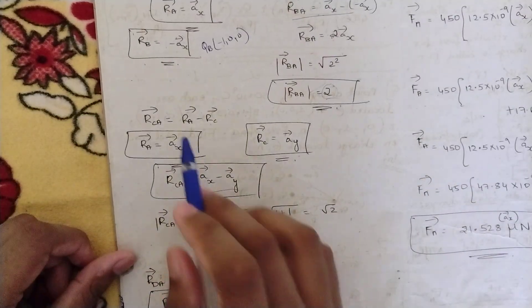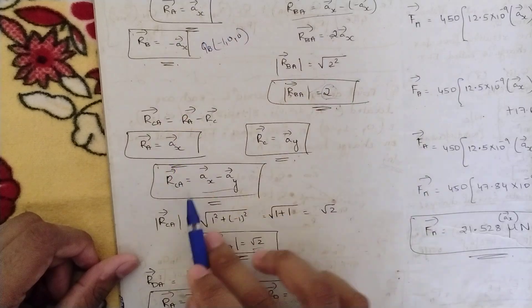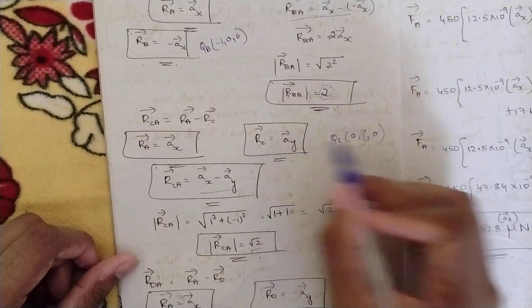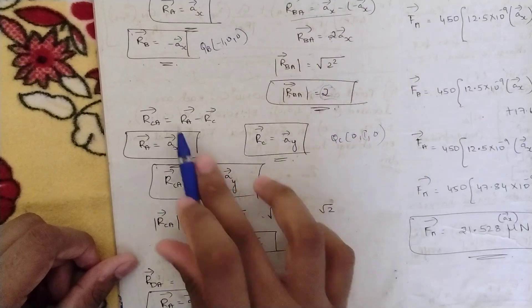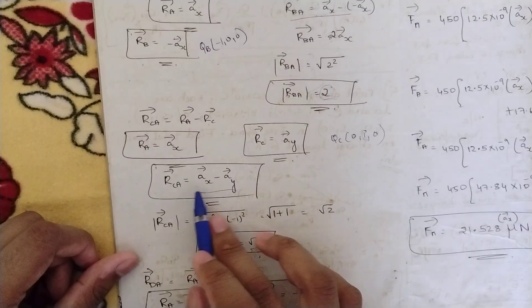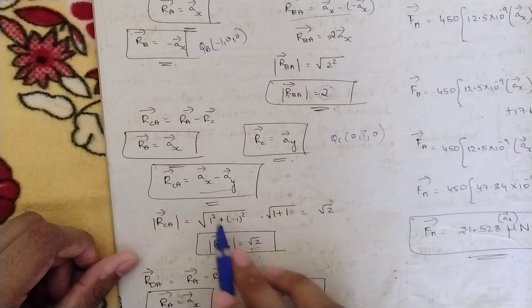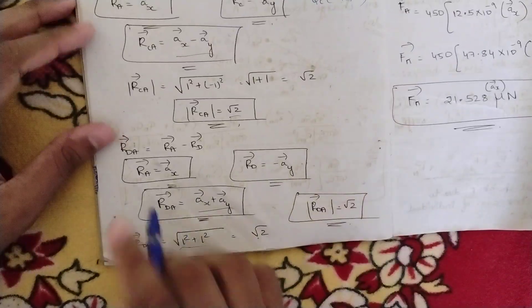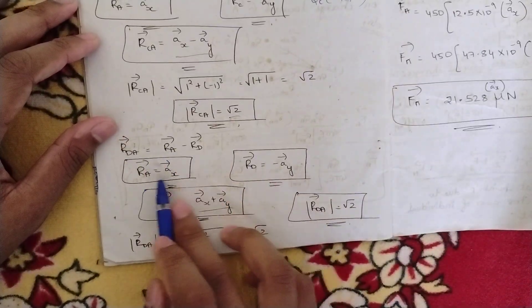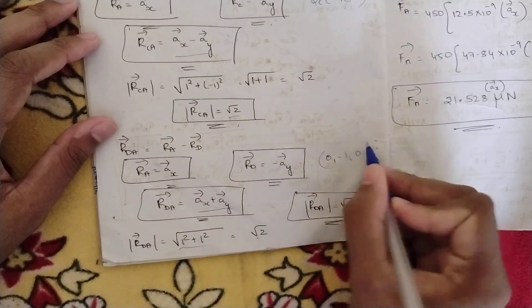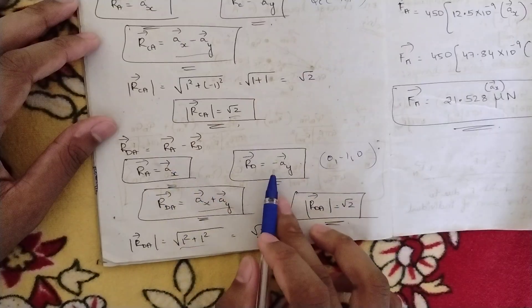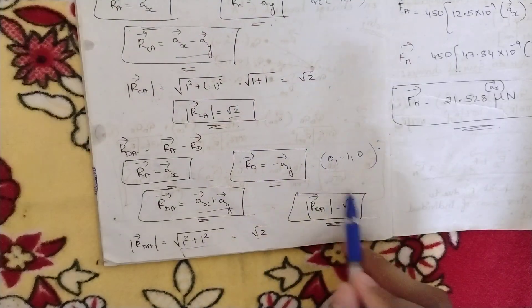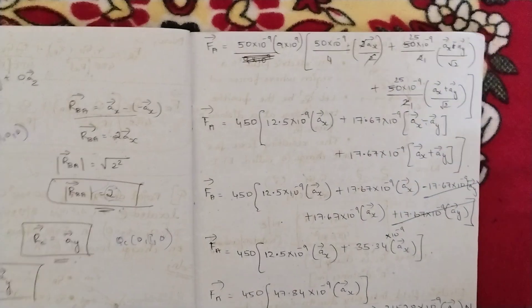Next find rCA = rA − rC. rA = ax; rC corresponds to C(0,1,0), so rC = ay. Therefore rCA = ax − ay, and its magnitude = √(1² + (−1)²) = √2. Similarly, rDA = rA − rD. rD corresponds to D(0,−1,0), so rD = −ay. Therefore rDA = ax − (−ay) = ax + ay, and |rDA| = √(1² + 1²) = √2. So |rCA| = |rDA| = √2.